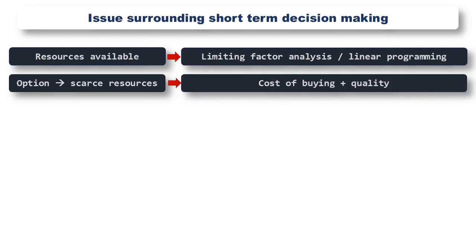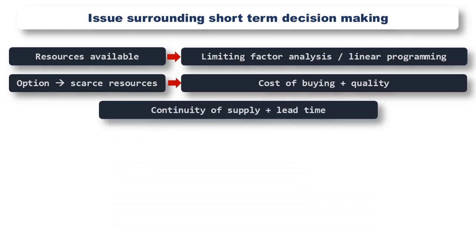Within this decision we not only need to consider the cost of buying the product in, but we also need to think about the quality of the product being made for us. If the product quality isn't as good as the item being made in-house, should the decision be made to outsource and risk a loss in reputation? Or should production be kept in-house to maintain reputation? Or is quality not a major factor for our customers? We should also think about continuity of supply and lead times if we are considering outsourcing production, as we need to ensure that we can meet customer demand.